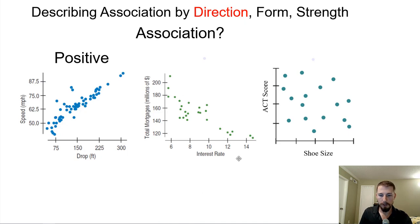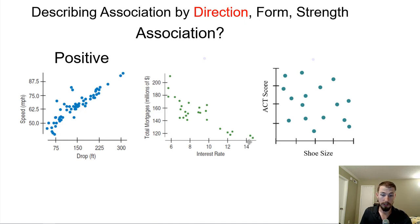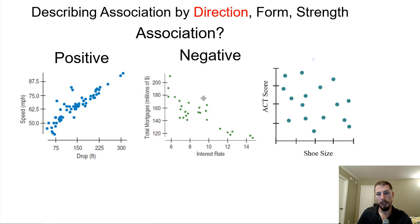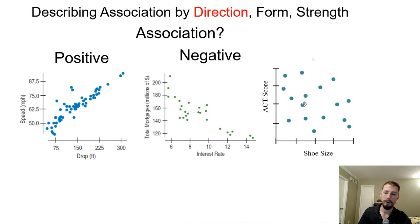Interest rates would be a negative association — they're inversely related. As we increase interest rates to something like 14%, total mortgages in millions are going to go down. And if we're graphing shoe size and ACT scores, as expected, there's not going to be an association between those. It's not negative or positive — it would just be neither.